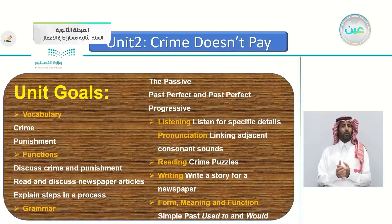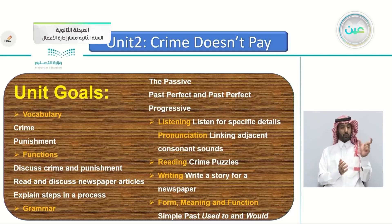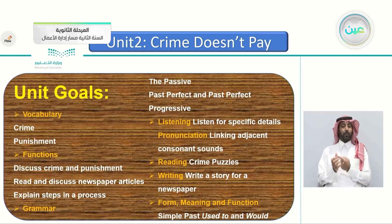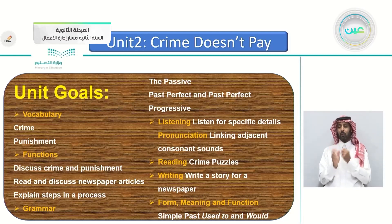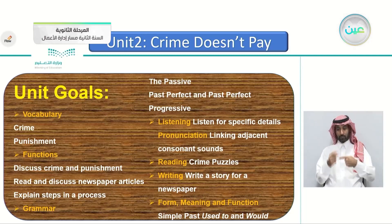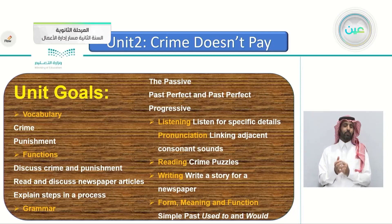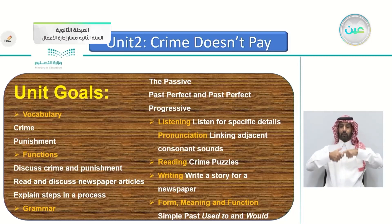These are the goals or objectives of this unit. In the vocabulary section, you'll learn about crime and punishment. The functions include: discuss crime and punishment, read and discuss newspaper articles, and explain steps in a process. The grammar will cover the passive, passive perfect, past perfect, and the progressive. For listening, we will listen for specific details and pronunciation — linking the consonant sounds.